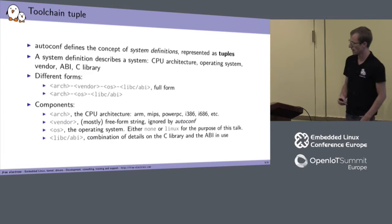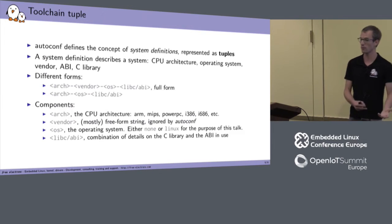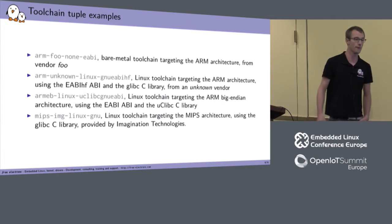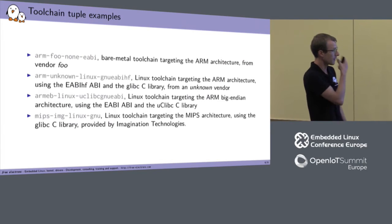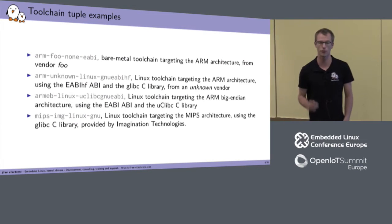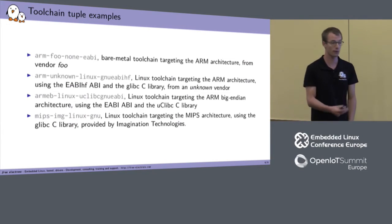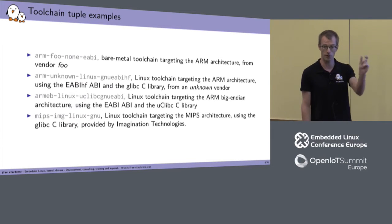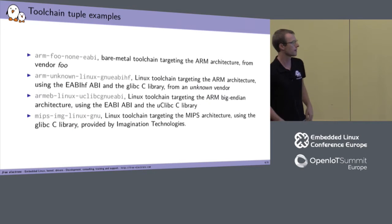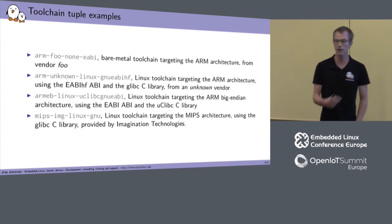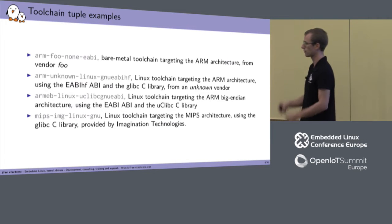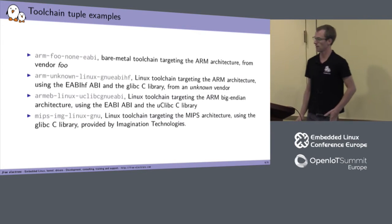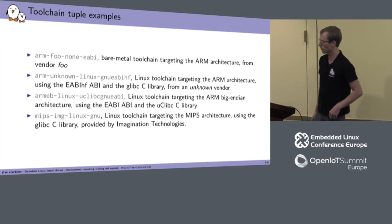The libc-ABI part gives details on which C library and ABI are being used. Here are some examples: 'arm-foo-none-eabi' indicates a bare metal toolchain targeting ARM using the EABI. 'arm-unknown-linux-gnueabihf' is a Linux toolchain from an unknown vendor targeting ARM, using glibc and the EABI-HF ABI. All this information is encoded in the tuple — similarly for ARM big-endian Linux targeting uClibc with EABI, or MIPS architecture variants.